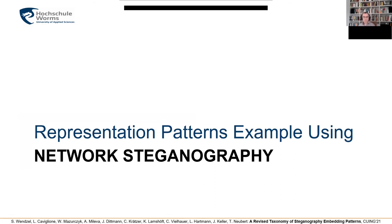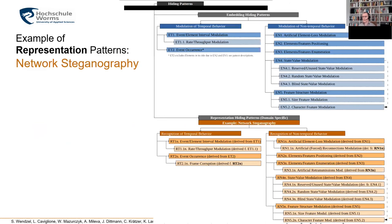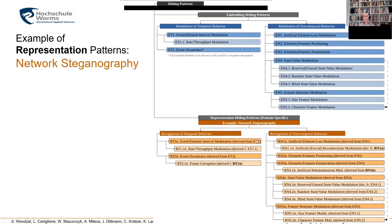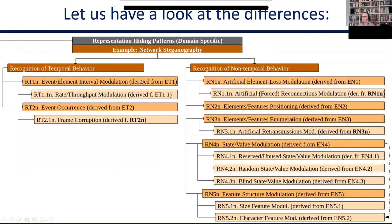Now let's briefly look at the network steganography representation patterns — how the information would be represented for the covert receiver, and what the covert receiver needs to look at. These patterns are derived from the embedding patterns — that's a key thing; we do not reinvent the wheel here. As you can see, in non-bold font they are derived from the embedding patterns ET1 and so on, and this also works for the sub-patterns.